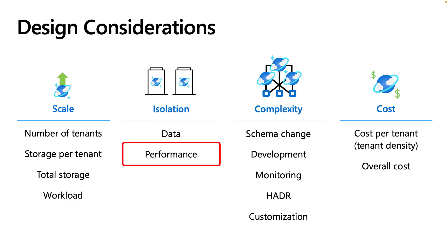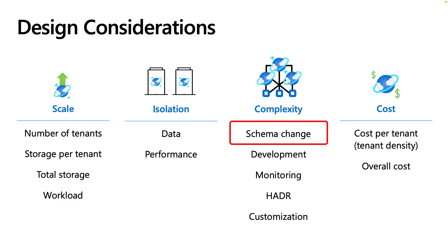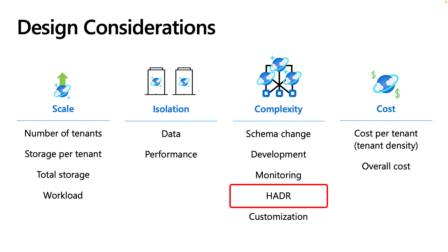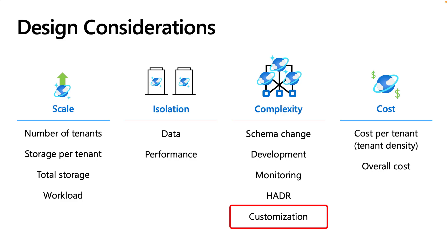Performance isolation is simply preventing one customer's workload from impacting the performance of another customer's workload. Complexity is probably one of the most overlooked design considerations, yet it has a direct long-term impact on the cost to operate a solution and potentially other aspects such as availability. You will need to think beyond simple performance impacts and consider things like how you're going to implement a schema change after the system is up and running, whether your team has adequate development skills, and how you will monitor the system at both the overall and individual tenant level. Another often overlooked area is tenant customization — how do you allow customization of the data tier in your application, and how will that be implemented?